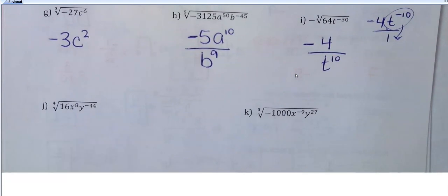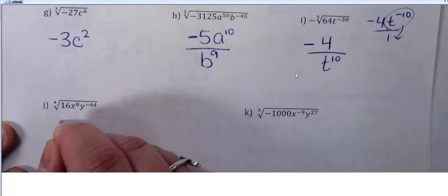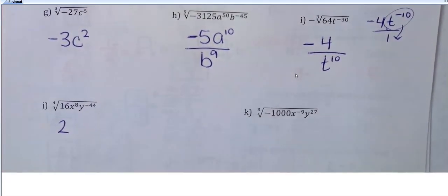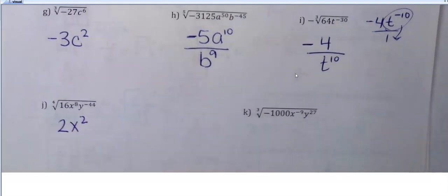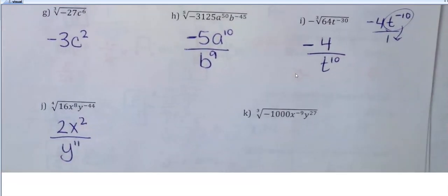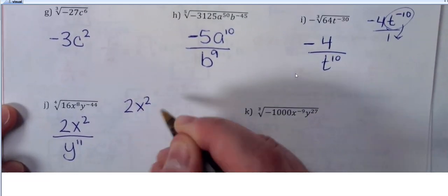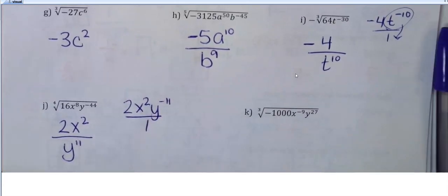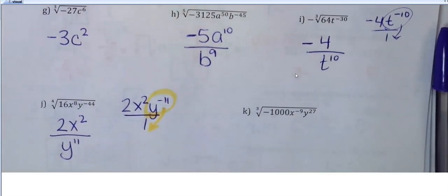This one's a 4th root. 16 can be tricky because it's on the square root list and the 4th root list — what to the 4th power is 16? That's going to come out as 2. For the variables, divide the exponent by the root: 8 divided by 4 is 2, and negative 44 divided by 4 is negative 11. So I just put y to the positive 11 on the bottom. This would be 2x squared y to the negative 11th — then move the negative exponent down to make it a positive exponent on the bottom.